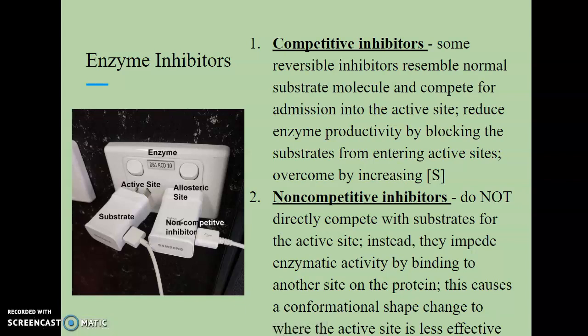We have competitive inhibitors and non-competitive inhibitors. A competitive inhibitor is a reversible inhibitor that actually resembles the normal substrate molecule, so it will compete for admission into the active site. If the competitive inhibitor binds to the active site, it blocks the substrate from entering, reducing enzyme productivity. One way to overcome a competitive inhibitor would be to increase the concentration of the substrate — therefore you have more substrate molecules competing with the inhibitors, and potentially more substrate molecules can bind to the active site rather than the competitive inhibitor.